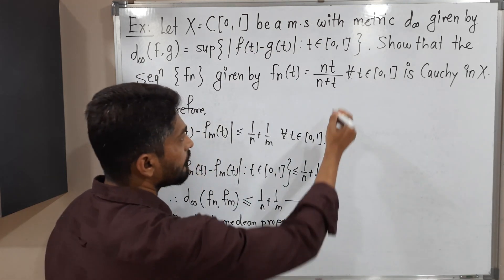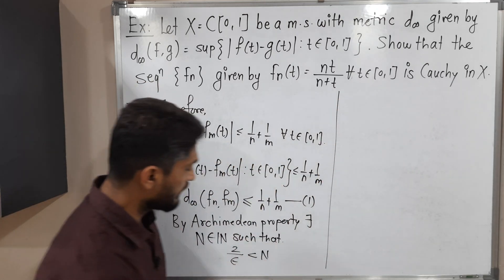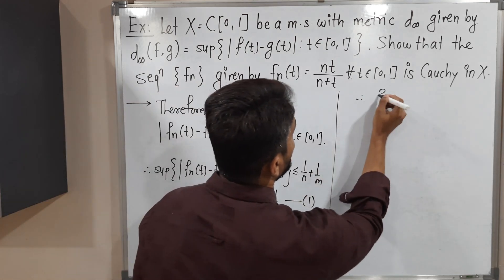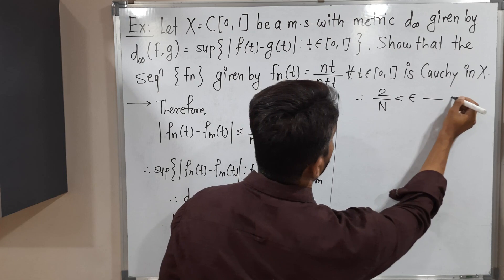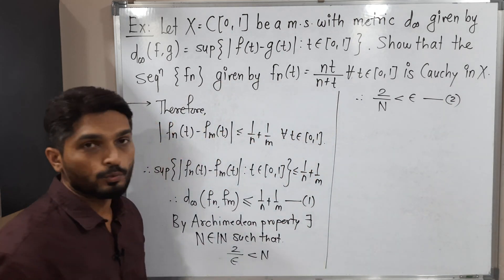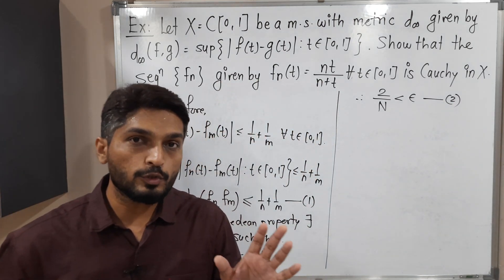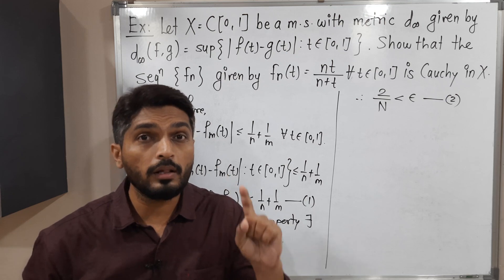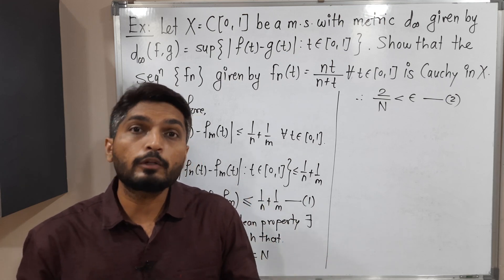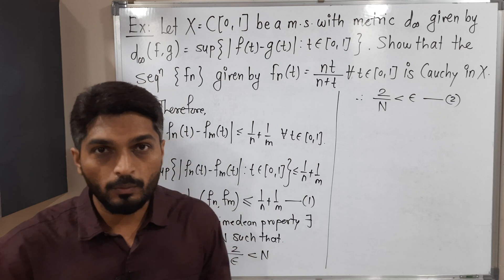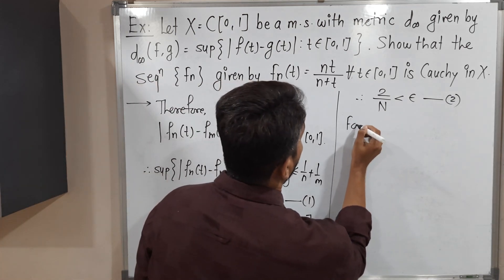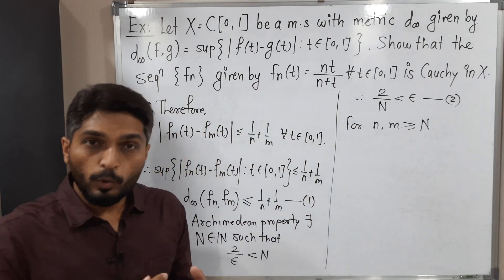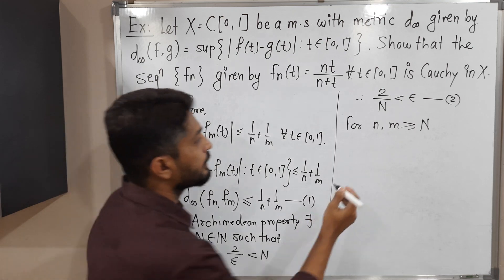Now, as in the definition of a Cauchy sequence, we write: for all n, m greater than or equal to capital N. That condition we also need. So let us consider n, m greater than or equal to capital N — meaning both n and m are greater than or equal to capital N.